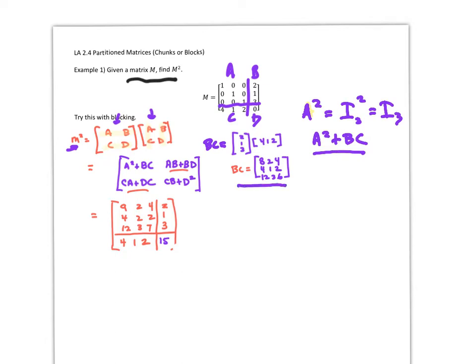Now if I add the identity matrix to this, I hope you can realize that we're going to end up with just this diagonal right here being bumped up by one. So now here is my A squared plus BC. Similarly I can go on and do the AB plus BD, CA plus DC and get it here, and then the CB plus D squared, and I'm going to end up with this right here.